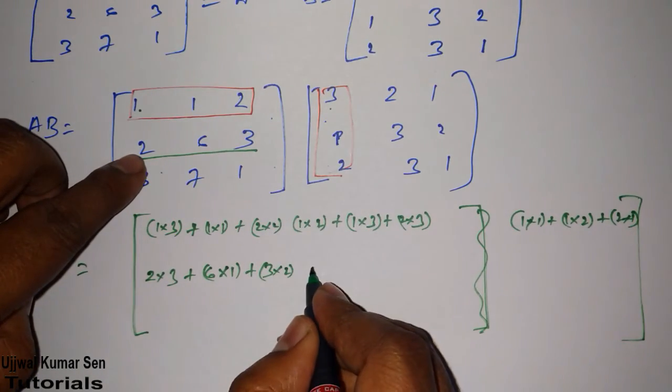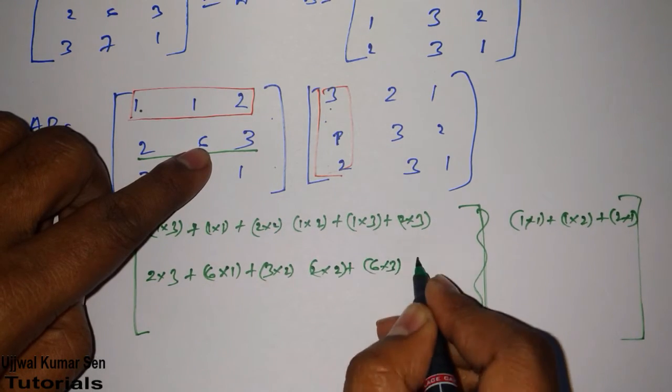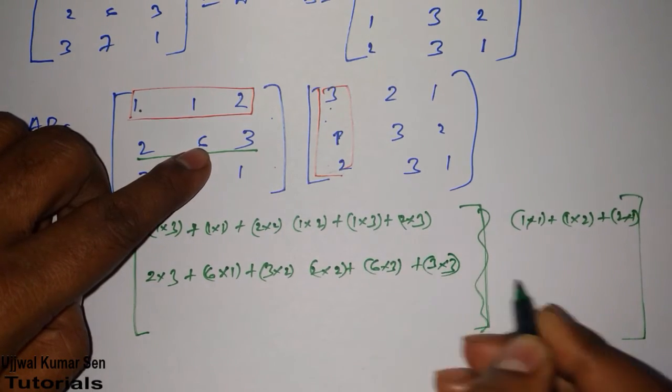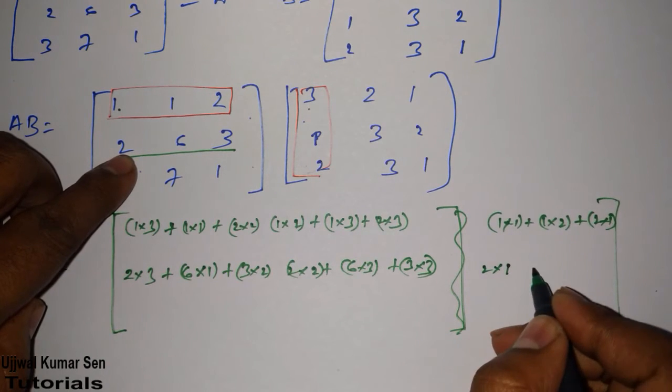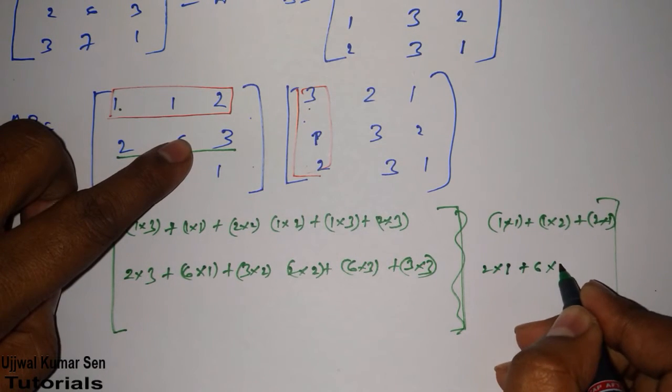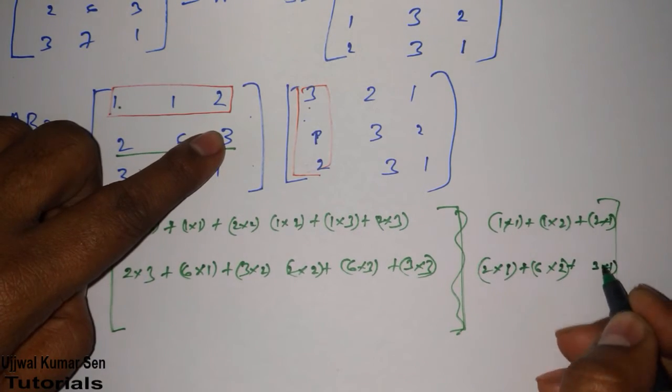Let's move to the next column. 2 multiple 2, 6 multiple 3, plus 3 multiple 3. Next column, 2 multiple 1 plus 6 multiple 2 plus 3 multiple 1.